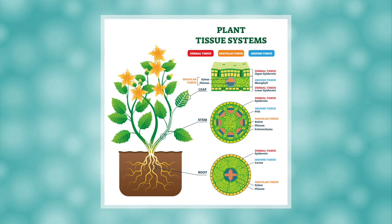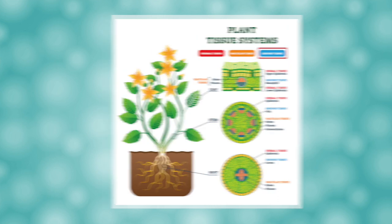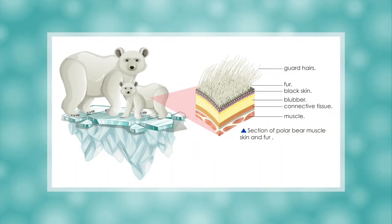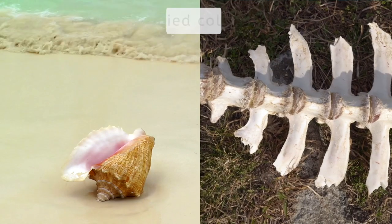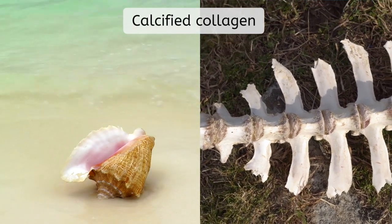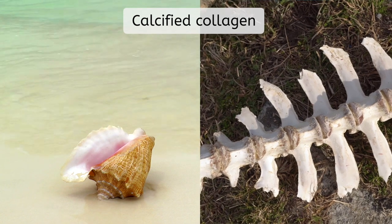In the previous lesson, we learned about several different types of plant tissue — dermal, vascular, and ground. Animals have multiple types of tissue as well. Remember that tissues are groups of similar cells that work together. The cells in many species of animals bond together in what is known as an extracellular matrix. It is held together with the molecule collagen, and when it becomes calcified, it turns into bones, shells, or other hard body parts.